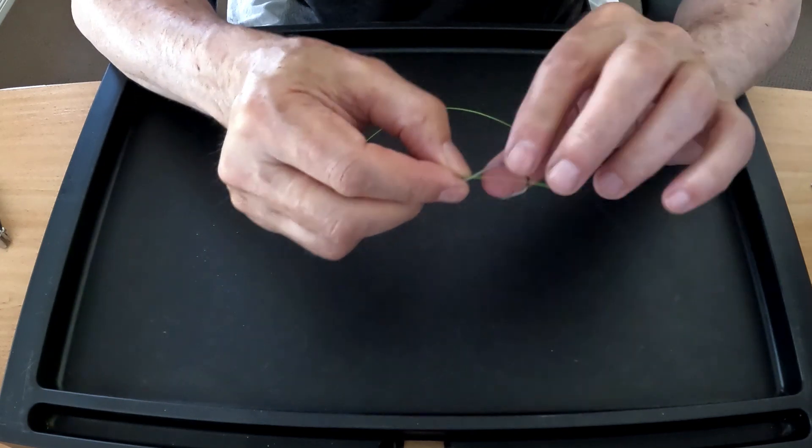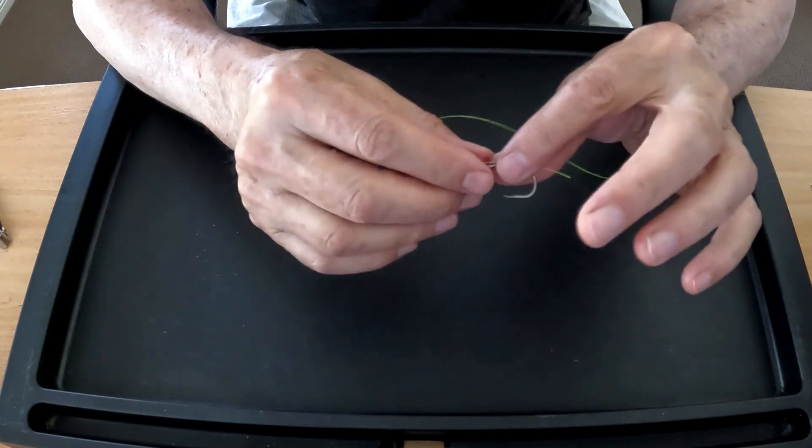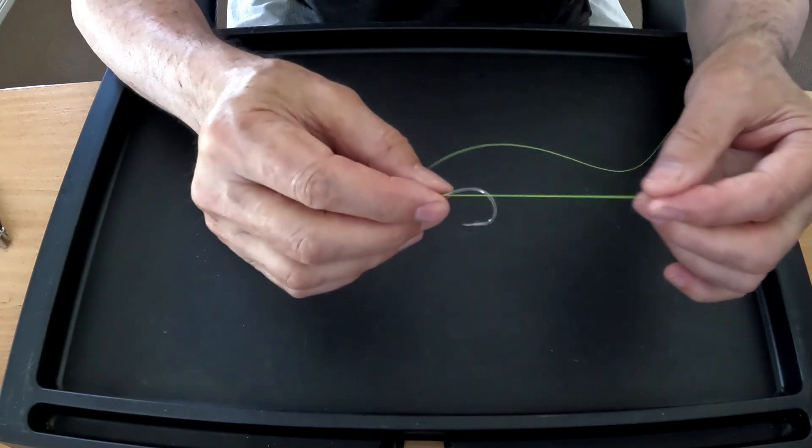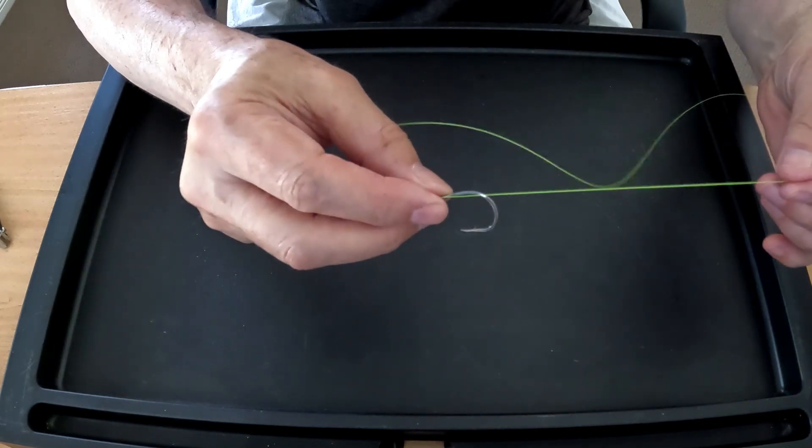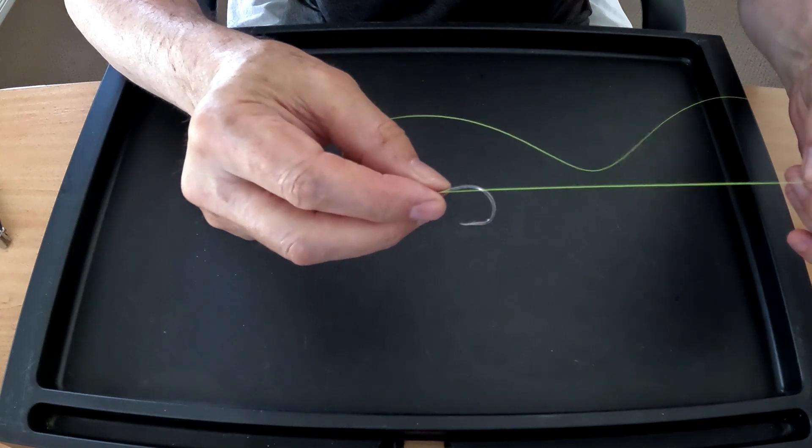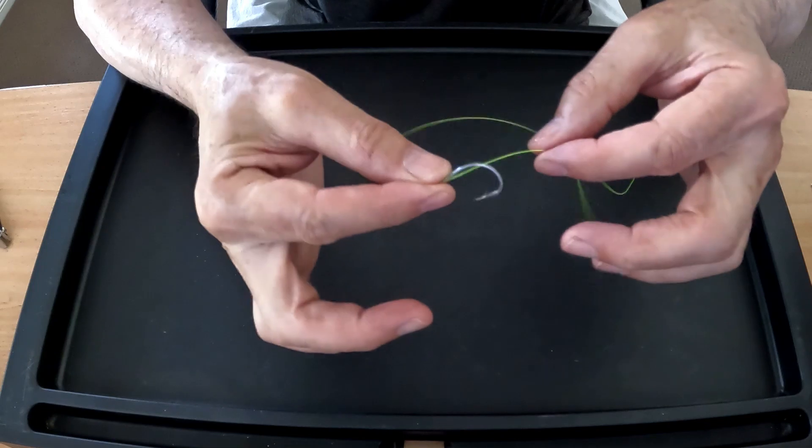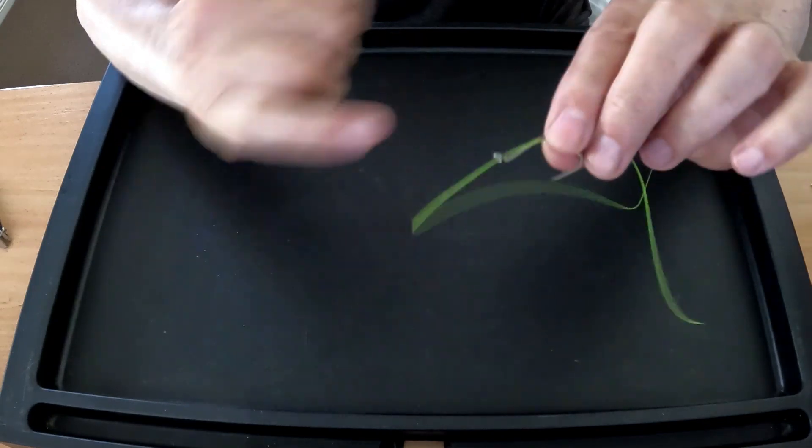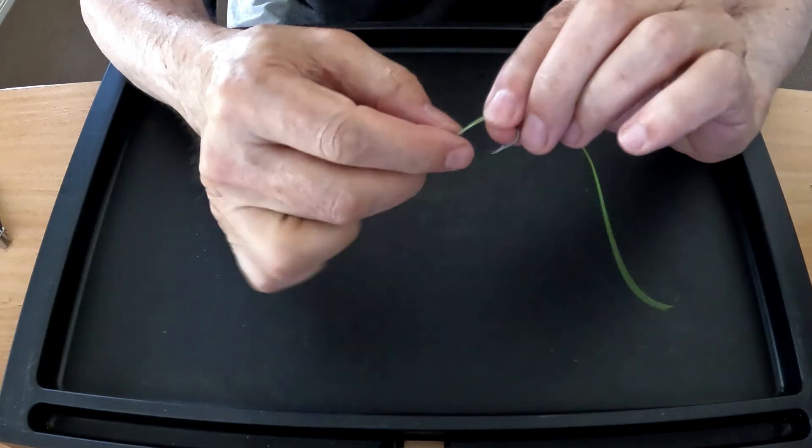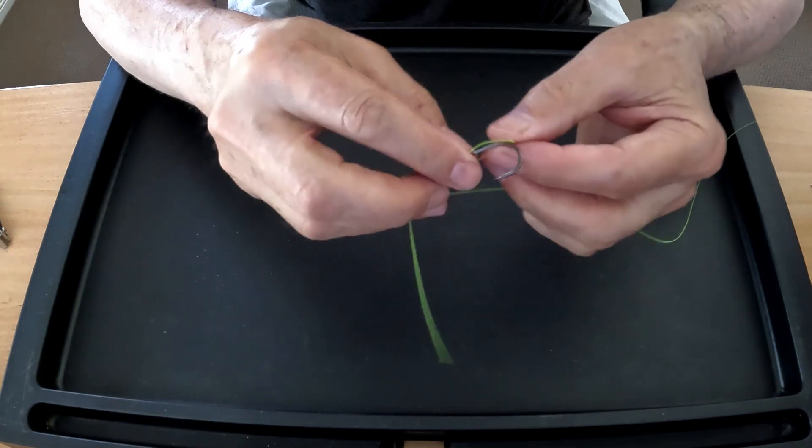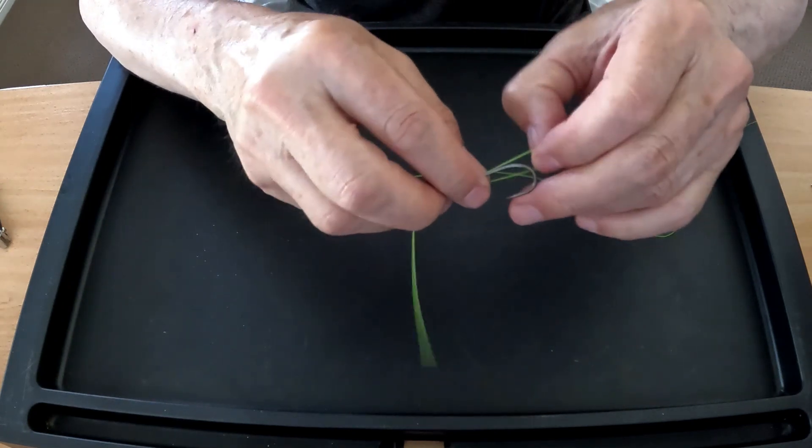All you're doing is putting the line through the eye of the hook like that, taking it out. Now, you need to give yourself plenty of line to play with because you'll be wrapping it around a few times, and when you run out of line, it becomes a little difficult. So all I'm doing then is I've taken that through the eye of the hook, then what I'm doing is I'm taking that back and creating a loop.